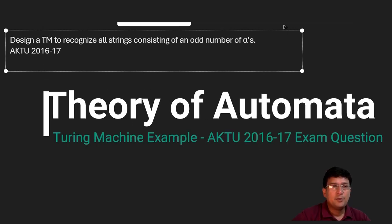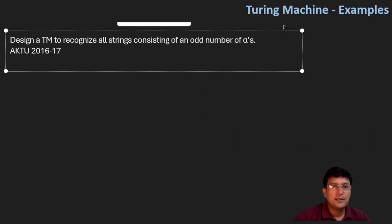Hello everyone. Let's take this problem. This says design a Turing machine to recognize all strings consisting of an odd number of A's.